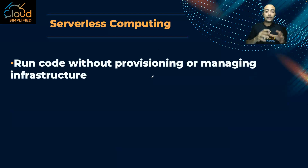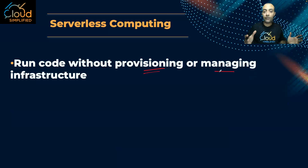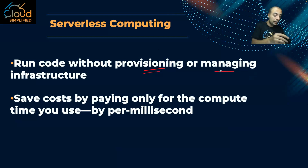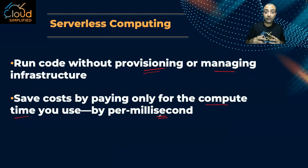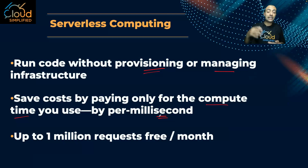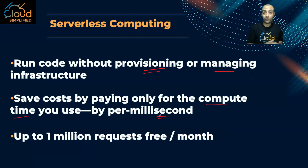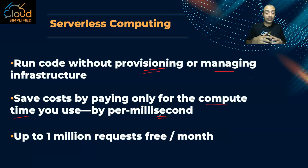With AWS Lambda, or serverless compute, I'm running the code without provisioning and without managing any infrastructure like an EC2 instance. I save cost by paying only for the compute time — and how do I pay? Per millisecond. If you remember EC2 instances, I used to pay per second. Here with my Lambda function, I pay per millisecond. And there's great news: we have something called a free tier. The Lambda function is part of the free tier, and you can have up to one million Lambda requests for free every month.